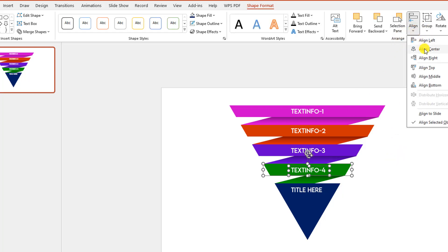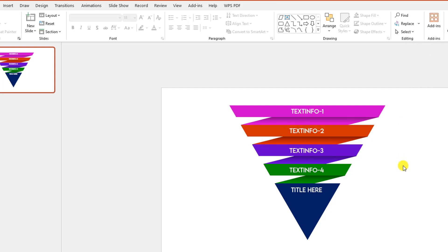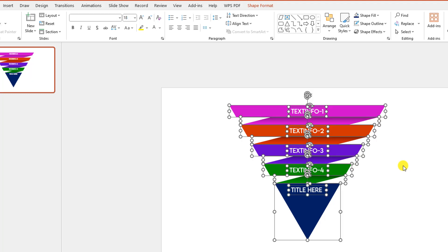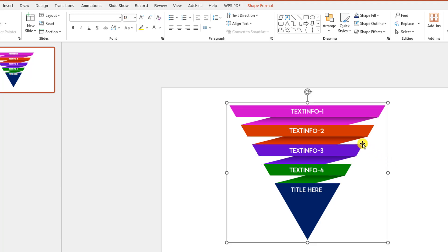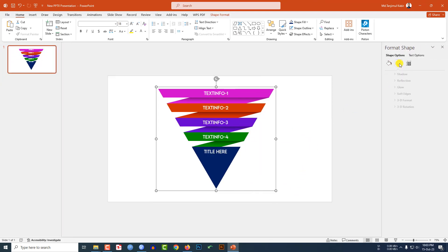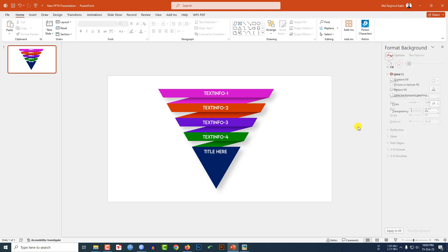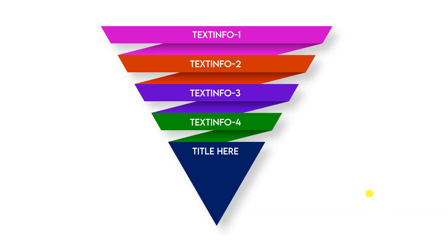Press Ctrl+D to duplicate the text box, place it, and align center with its corresponding shape. Repeat this for all sections, updating the text to one, two, three, four, and title. Now press Ctrl+A and Ctrl+G to group them together. Right-click, go to Format Shape, go to Effects, go to Shadow — change the transparency to 80%, the angle to 45 degrees, and the distance to 20. This is looking beautiful.